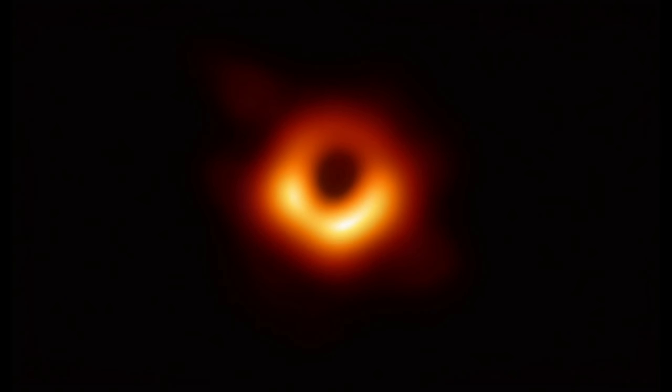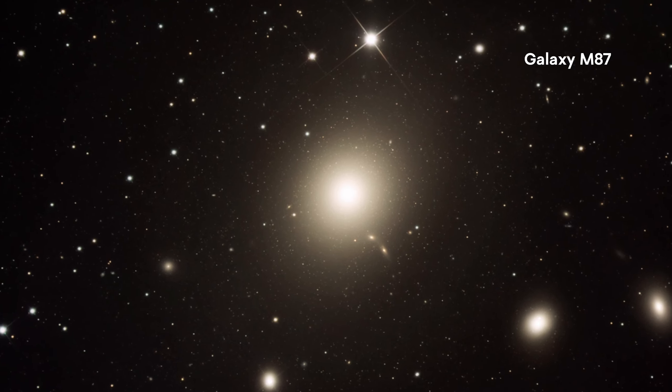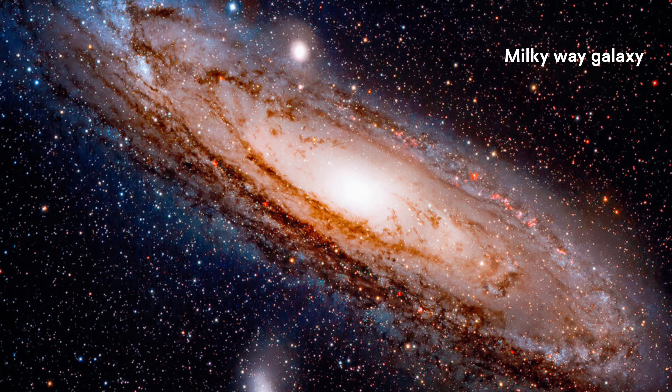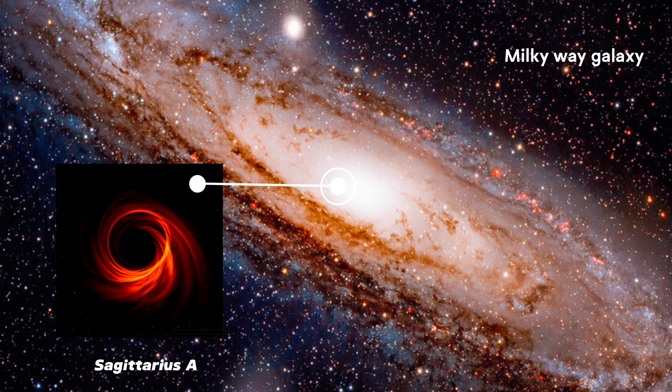The first photo ever taken of a black hole was taken by Event Horizon Telescope in April 10, 2019. This black hole is located at the center of the galaxy M87. There is a supermassive black hole located at the center of our Milky Way galaxy, named Sagittarius A.